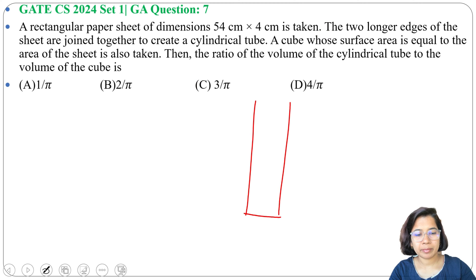The two longer edges of the sheet are joined together to create a cylindrical tube. So we will join these two longer edges to make a cylindrical tube. Like this is the cylindrical tube.